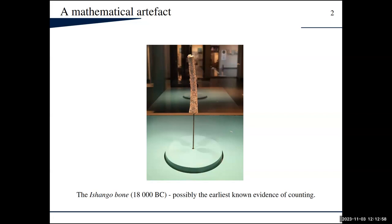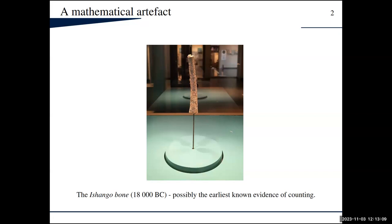People tried to count very early on, and enumerative combinatorics is considered to be one of the earliest subfields of math, or maybe the most ancient type of math. I did my dissertation in enumeration, and when laypeople ask what it's about, the short answer is: we try to count things that are difficult to count but also have some importance, some significance.